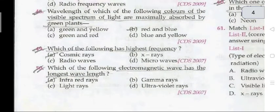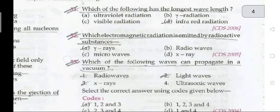Question 49: which of the following has the highest frequency? Cosmic rays. Question 50: which of the following electromagnetic waves has the longest wavelength? Infrared waves. Question 51: which electromagnetic radiation is emitted by radioactive substances? Gamma rays. Question 52: which of the following waves can propagate in a vacuum? Radio waves, light waves, and X-rays.